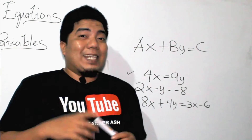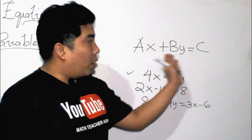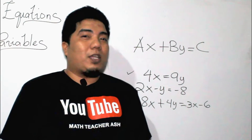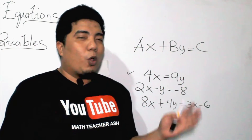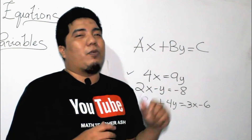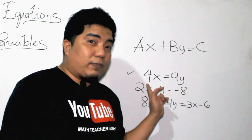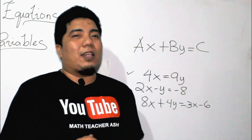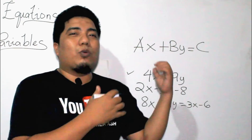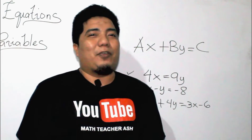But the question is, is this in the standard form? As we all know, the standard form is ax plus by is equal to c, where a, b, and c are real numbers. Therefore, this first equation is not yet in the standard form. Later, we will discuss how to transform this into its standard form.